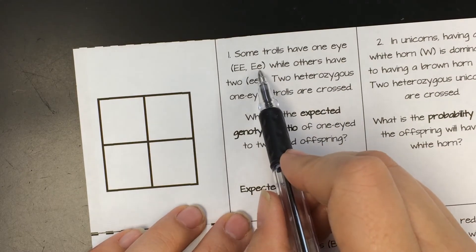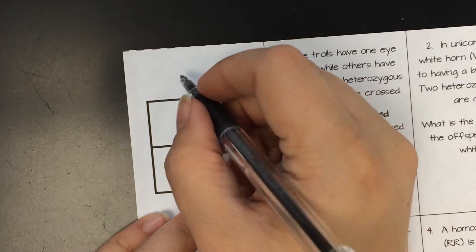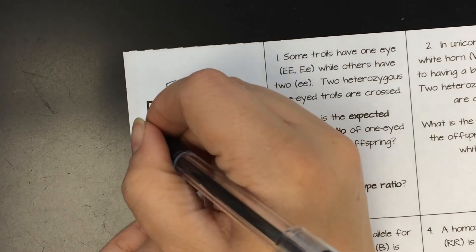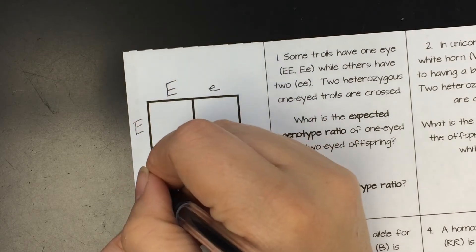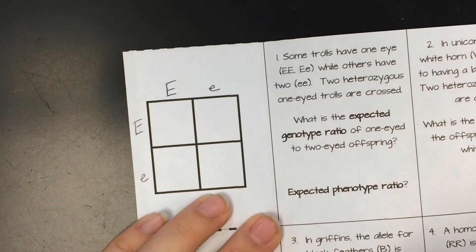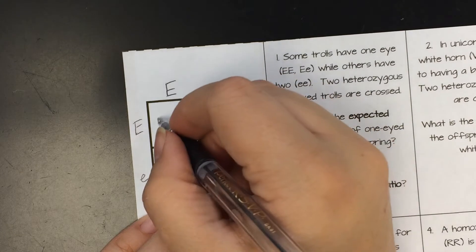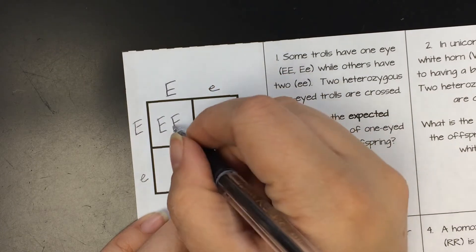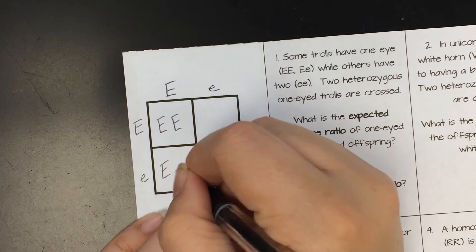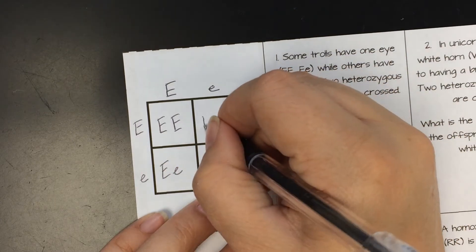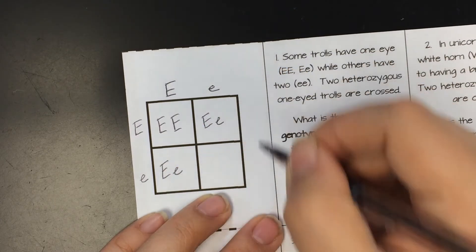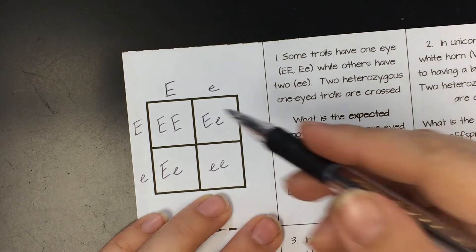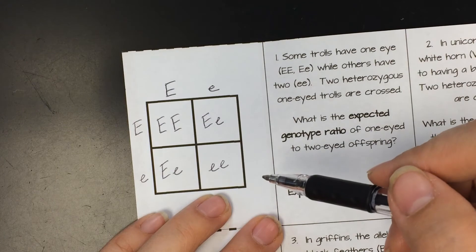So let's do our cross. They told us here we have two heterozygous one-eyed trolls. So that means they are big E, little e. So I'm going to put one parent on top, big E, little e. And the other parent on the side, big E, little e. Now I just go ahead and work the Punnett square. So we could have an offspring that's big, big. We might have an offspring that's big, little. Another that could be big, little. Or we could have an offspring that's little, little.